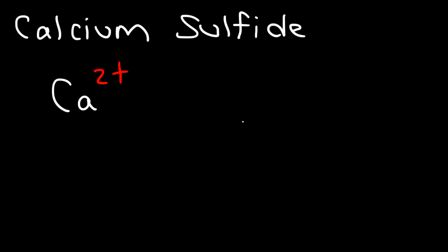Let's say if we want to write the chemical formula for calcium sulfide. The first thing we're going to do is write the ions. Calcium is an element in group 2, so therefore, as an ion, it's going to have a 2 plus charge. Sulfide is a chalcogen in group 6A, so it's going to have a 2 minus charge.